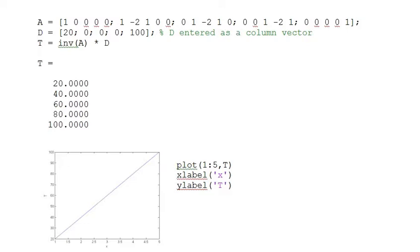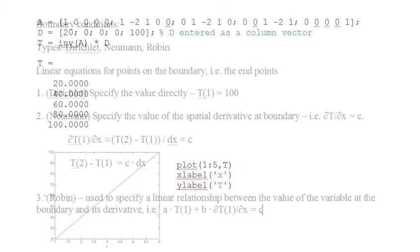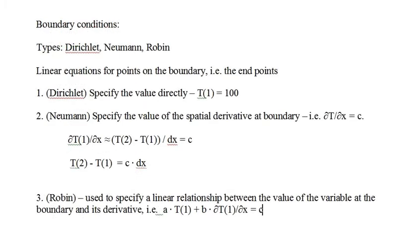We also have a few instructions to plot the results. The differential equation model gives us a linear equation for each interior grid point, but the FDM substitution doesn't work to produce an equation for the boundary points, and we need a linear equation for each point. There are three common types of boundary conditions: Dirichlet, Neumann, and Robin.